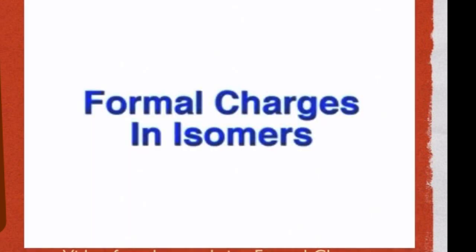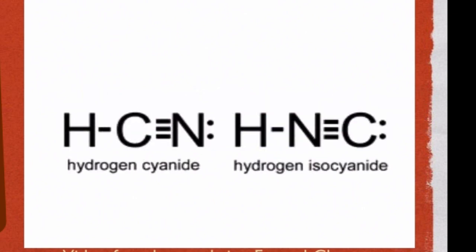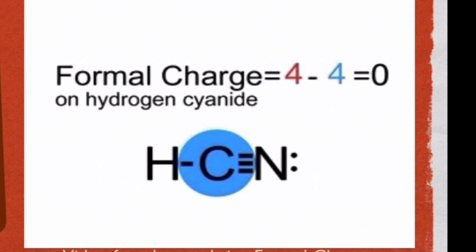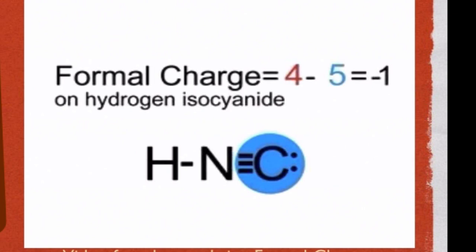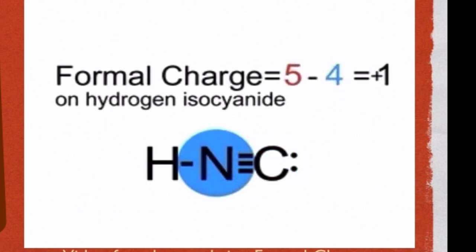Formal charge calculations can often help us identify the most stable isomers of molecules. Consider the isomeric compounds, hydrogen cyanide and hydrogen isocyanide. Both structures have octets of electrons about carbon and nitrogen. The formal charge on carbon in hydrogen cyanide is zero. Similarly, the formal charge on nitrogen is zero. In hydrogen isocyanide, the formal charge on carbon is minus one and the formal charge on nitrogen is plus one. Because the formal charges are non-zero in hydrogen isocyanide, we can predict that this isomeric form is less stable than hydrogen cyanide, as found to be the case.